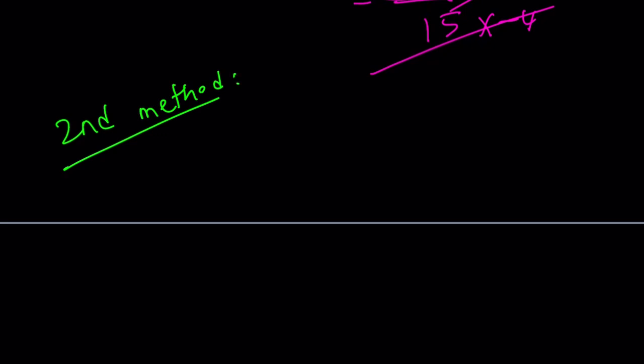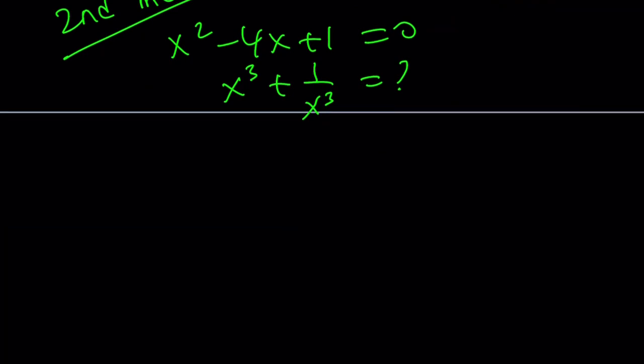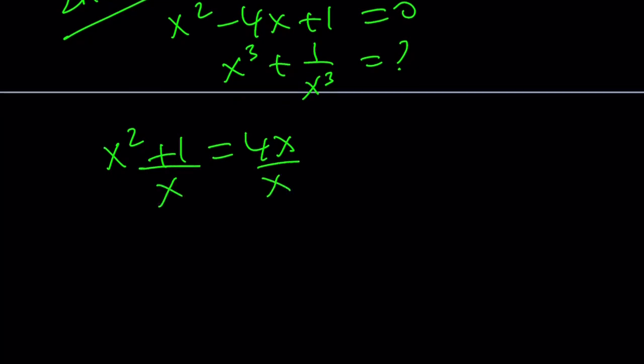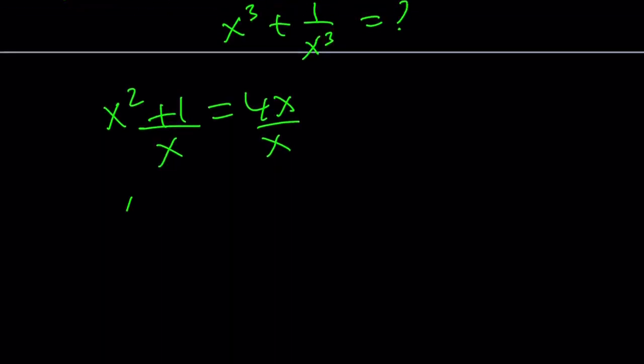Alright. So for my second method, one more time, I'm going to rewrite the original equation. And I'm supposed to evaluate x cubed plus 1 over x cubed, right? Let's go ahead and take a look. I want to isolate this time the 4x, and then divide both sides by x. Obviously, x does not equal 0. We know that, right? This gives me x plus 1 over x equals 4. Isn't that awesome?